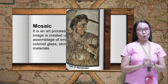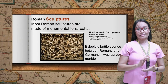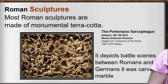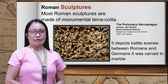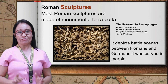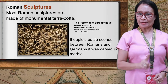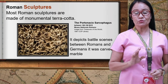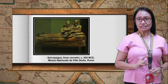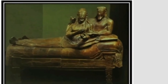Most Roman sculptures were made of monumental terracotta. Romans did not attempt to compete with the freestanding Greek works depicting history or mythology, but rather produced reliefs on the great Roman triumphal columns with continuous narrative reliefs. The Ludovisi Battle Sarcophagus was used for the burial of a Roman general involved in the campaign of Marcus Aurelius — it depicts battle scenes between Romans and Germans, carved in marble. The Sarcophagus from Cerveteri was made of terracotta, measuring 6 feet 7 inches, showing a husband and wife reclining comfortably as if on a couch.